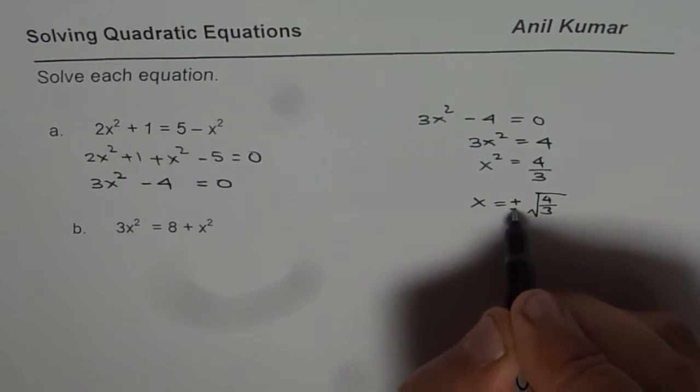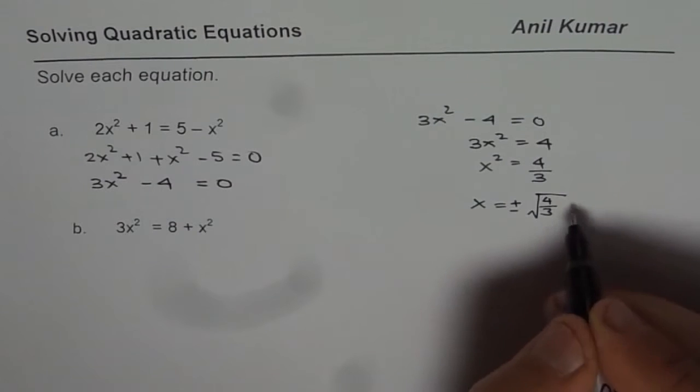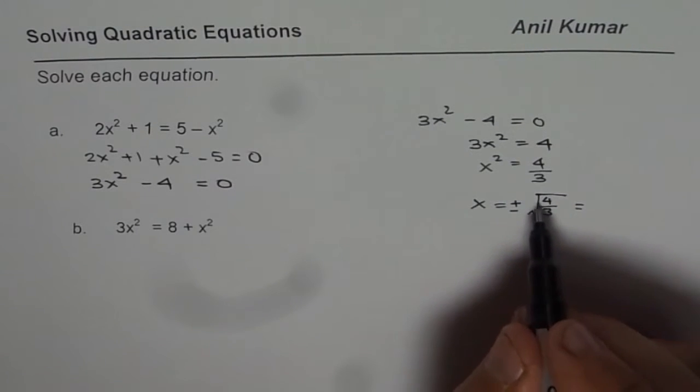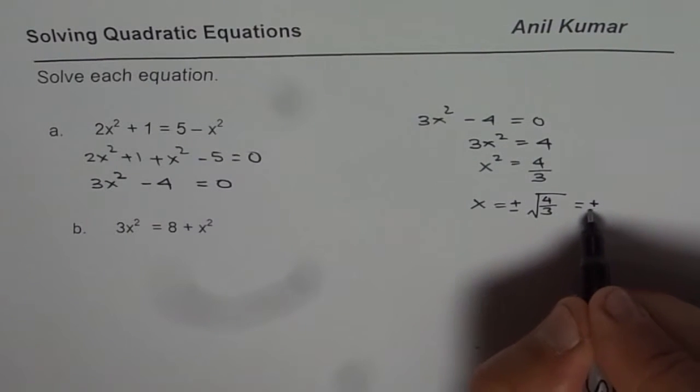Whenever we square root, we have to do plus and minus. So, we have plus and minus square root of 4 over 3. You know, square root of 4 is 2. So, you can write this as plus minus 2 over square root of 3.